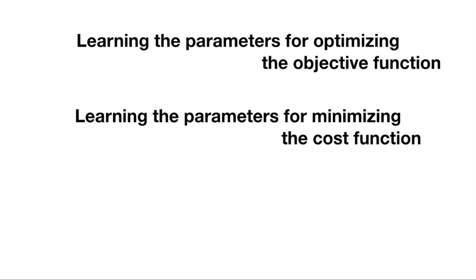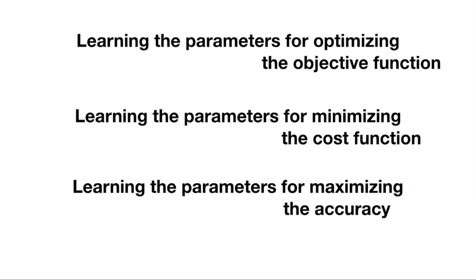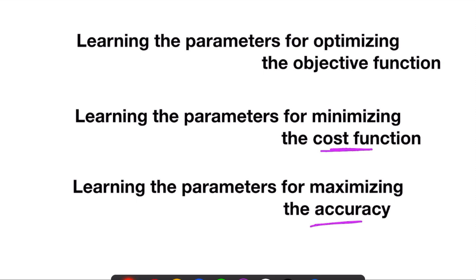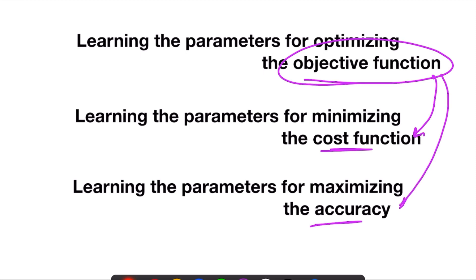And if the function is a maximizing function — a positive oriented function — we write 'learning the parameters for maximizing the accuracy.' Cost function is one example for minimizing, and accuracy or F1 score are examples for maximizing. Objective function is a generic term for both minimizing and maximizing.